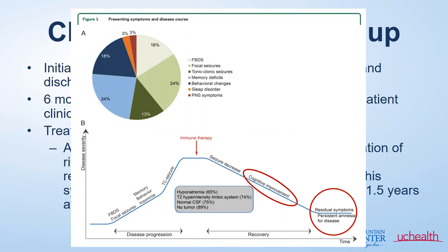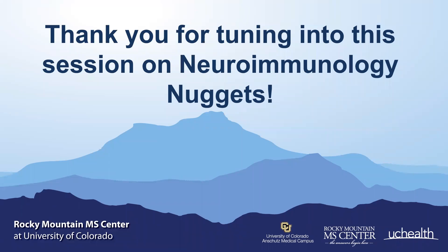Often when immune therapy is started, seizures drop down and decrease pretty quickly, and then you have this slow cognitive improvement, with some degree of mild cognitive impairment and residual symptoms left behind, although most patients do return to near complete neurologic recovery. Signs of LGI-1 encephalitis at diagnosis include low blood sodium levels, changes on MRI, and some may have normal spinal fluid — only a fraction show inflammation. Cancers are not common with this antibody, seen in only 10% of cases. Thank you for tuning into this edition on LGI-1 autoimmune encephalitis for our Neuroimmunology Nuggets.